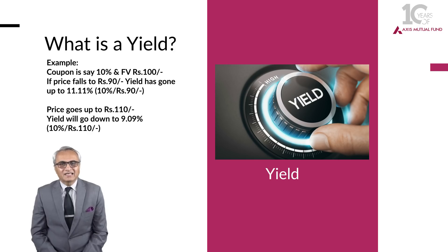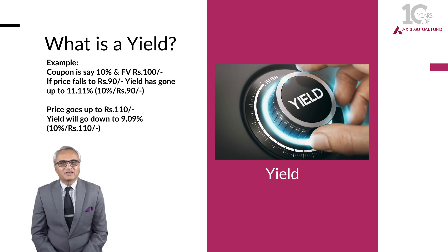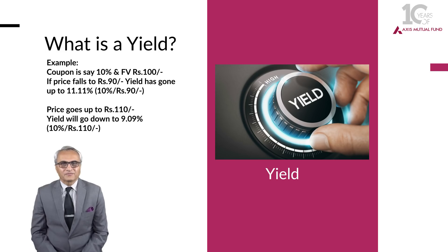As against that, if the same investor buys it at a higher price than the original 100 rupees face value — let us assume at 110 rupees — the yield for this investor will be 9.09%, which is 10% divided by 110. So yield gets determined by the market price at which the secondary investor invests in the debt instrument. So yield is not equal to coupon — please keep that in mind.